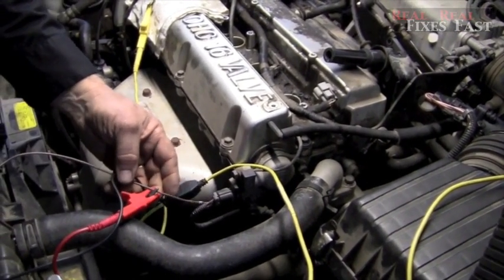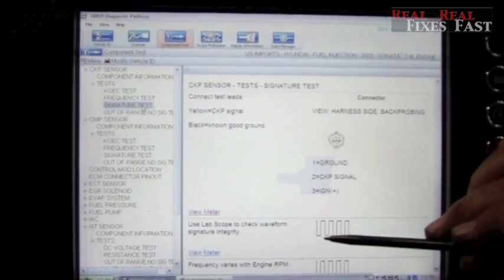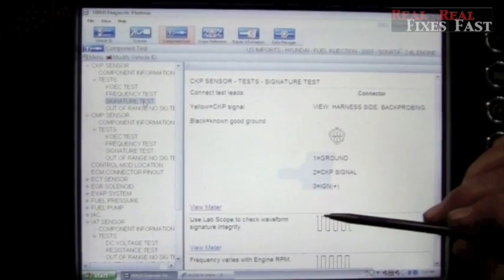We identified which one was the signal wire and we're tapped into that. In the signature test, it tells us that this should be a square wave. It should be a nice clean up and down on and off square wave.